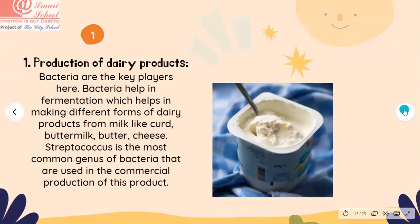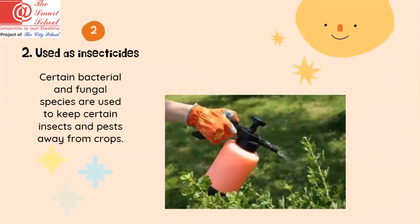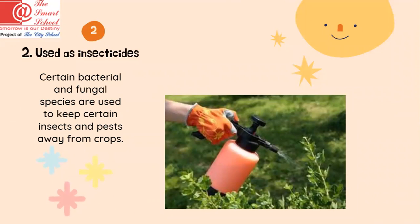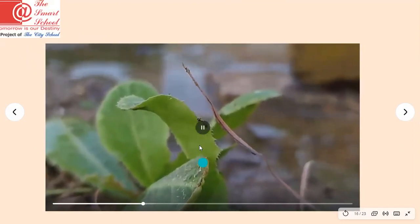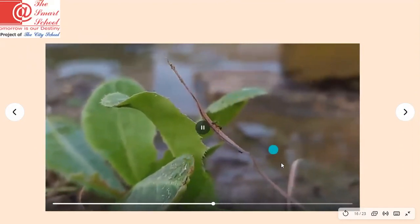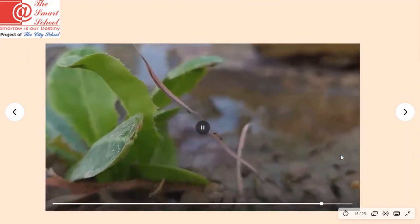The second use of microbes is as insecticides. Certain bacteria and fungal species are used to keep certain insects and pests away from crops. As you know, some insects can cause damage to our crops and fields, so in order to keep crops safe we must use insecticides, and these insecticides are sometimes made using microbes. As you can see in the animation, these insects can cause damage to our plants, so we use insecticides to keep them away.